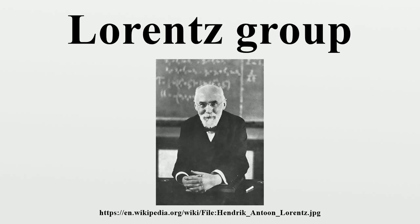It is denoted SO+. The set of the four connected components can be given a group structure as the quotient group O/SO+, which is isomorphic to the Klein 4-group. Every element in O can be written as the semi-direct product of a proper orthochronous transformation and an element of the discrete group {1, P, T, PT}, where P and T are the space inversion and time reversal operators. Thus an arbitrary Lorentz transformation can be specified as a proper orthochronous Lorentz transformation along with two bits of information picking out one of the four connected components. This pattern is typical of finite-dimensional Lie groups.